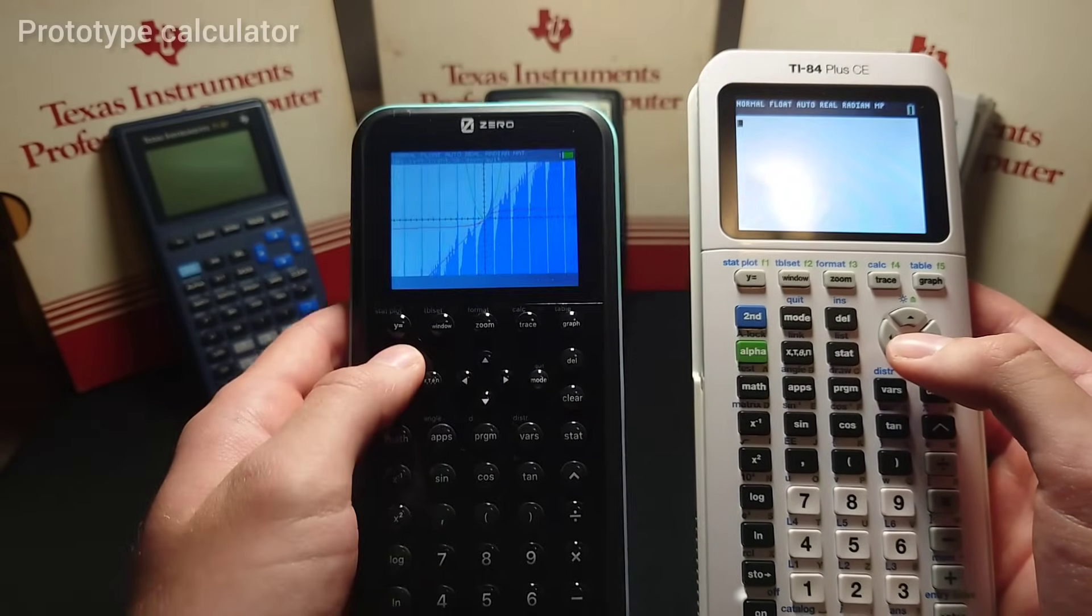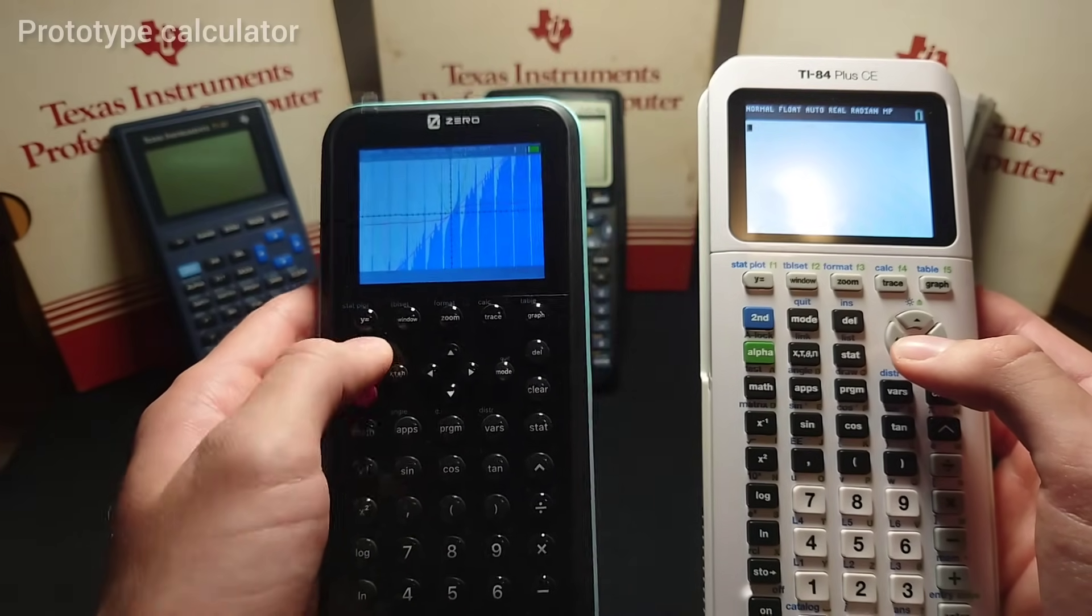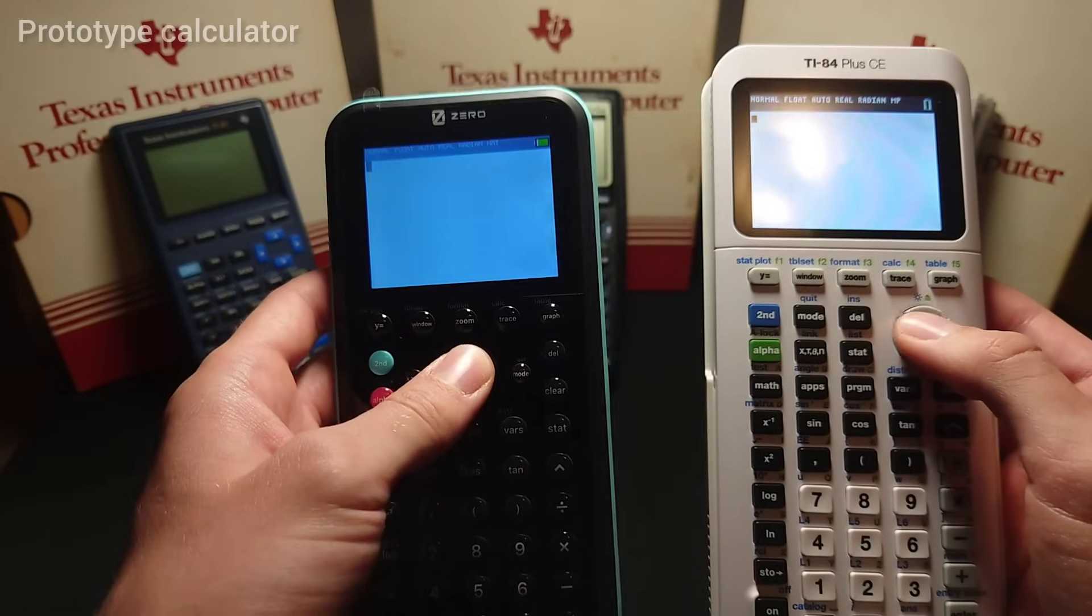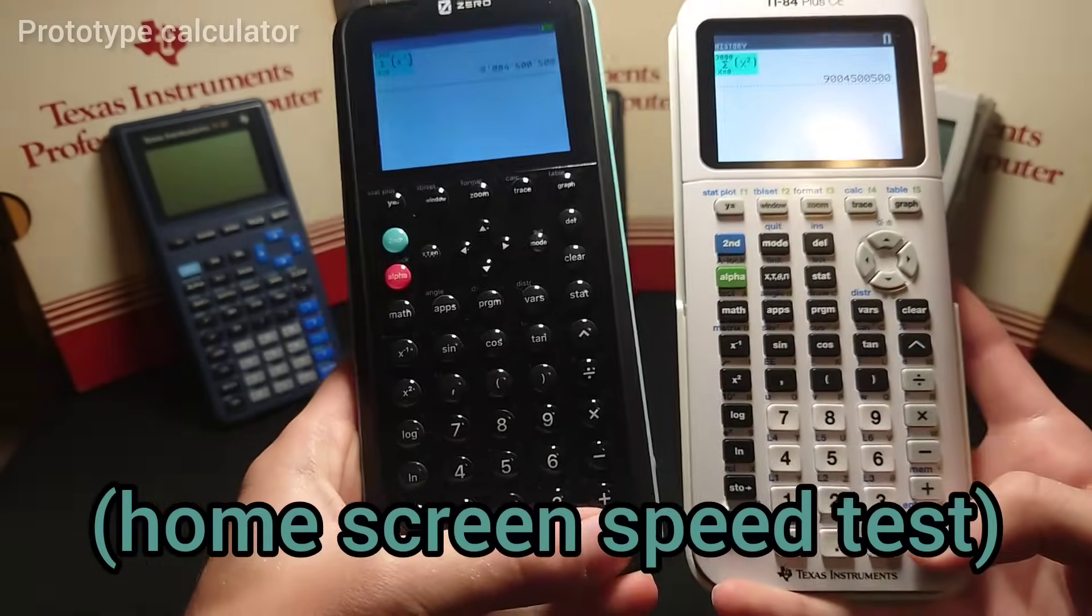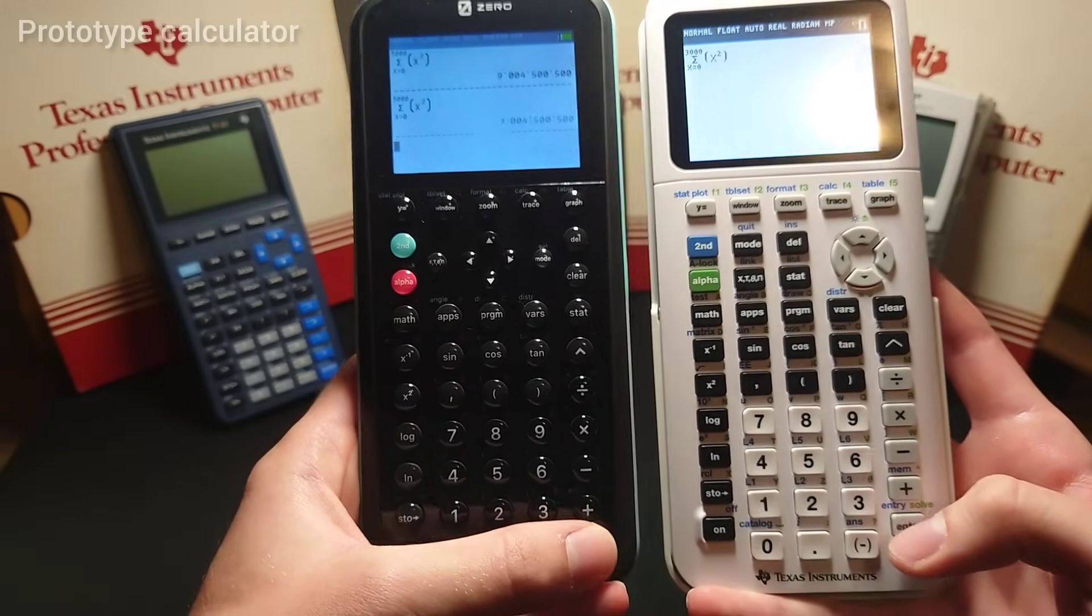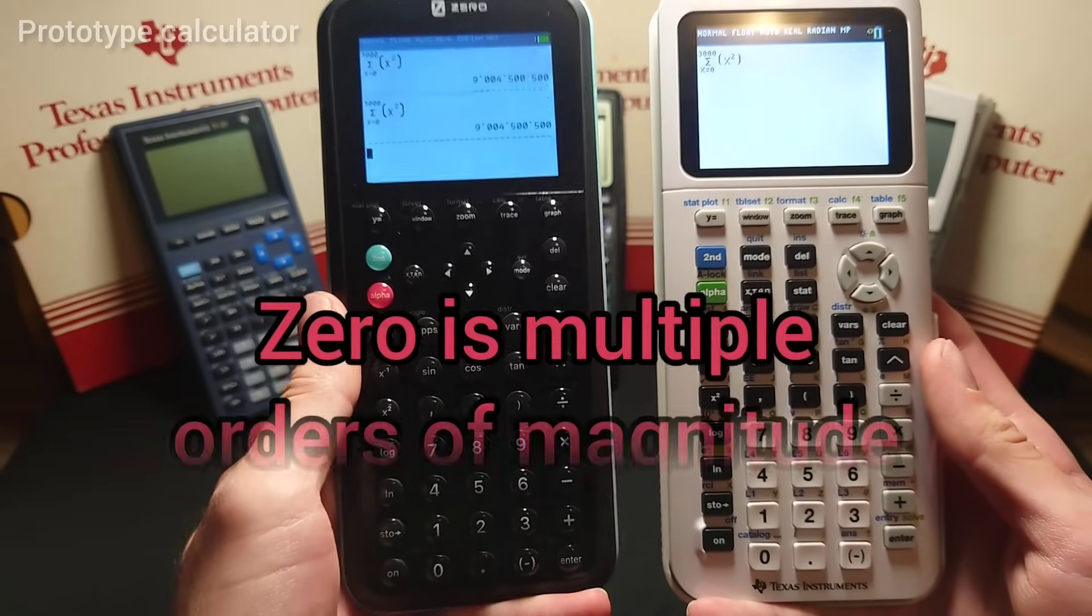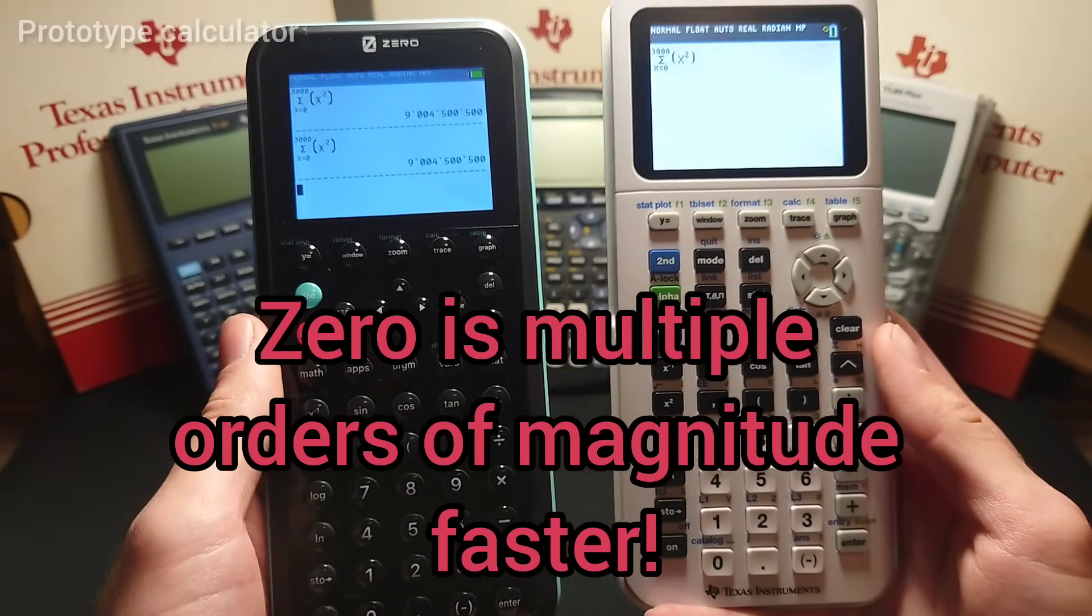This is not only apparent on the graph screen, but also, one current bug is you can't press clear to quit the graph screen right now. You have to do second quit. I expect this will be fixed on the final release. Go into the calculation history. We will select the summation and run it at the exact same time. The zero did it instantly, while the TI-84 Plus CEs going to take several seconds to calculate it.